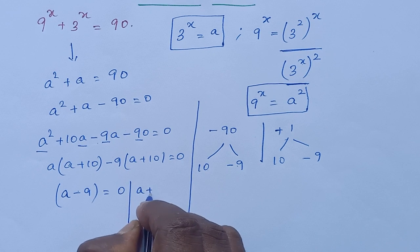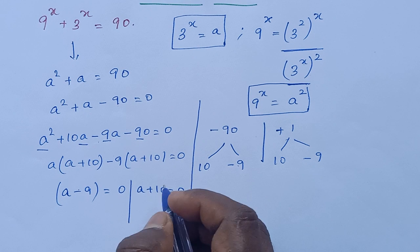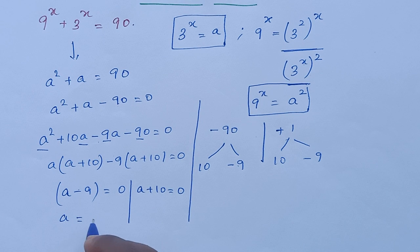Or a plus 10 equals 0. So a equals 9 or a equals minus 10.